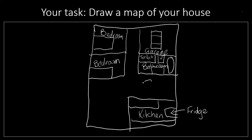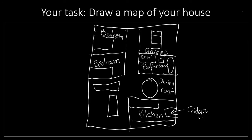This is my dining room, and there's my dining table. And this is my lounge room — there's one lounge, there's the other lounge, and on this wall is my TV.